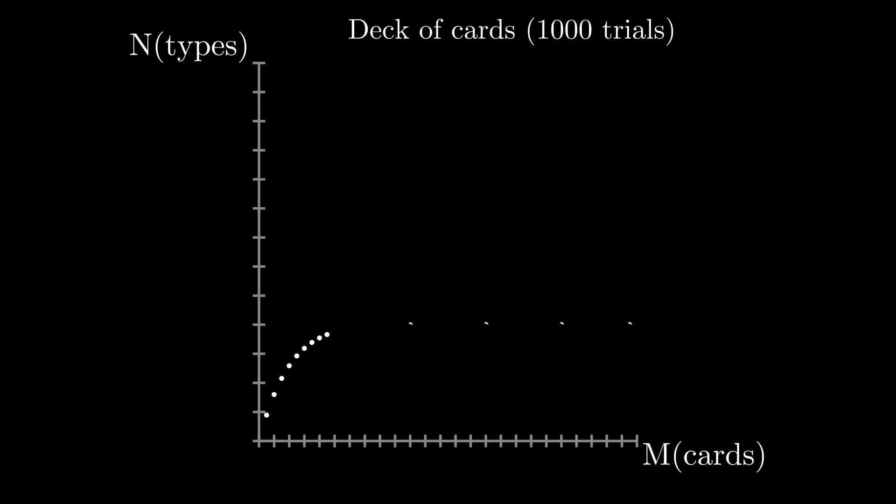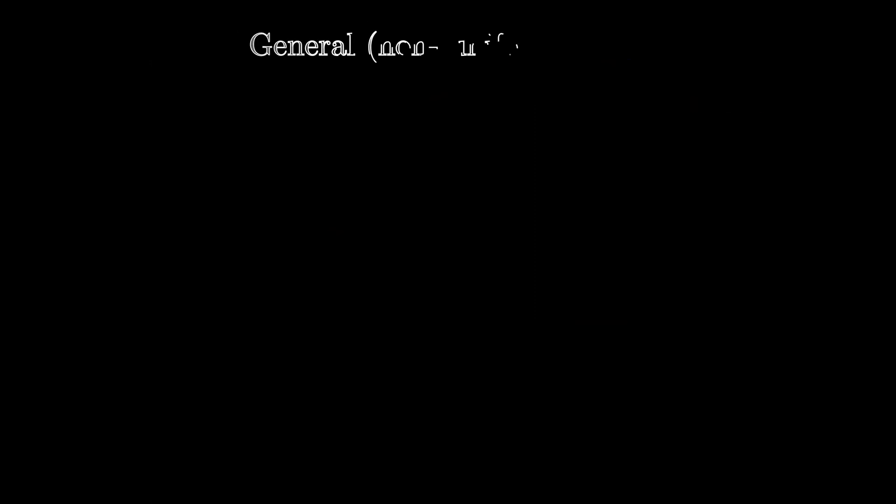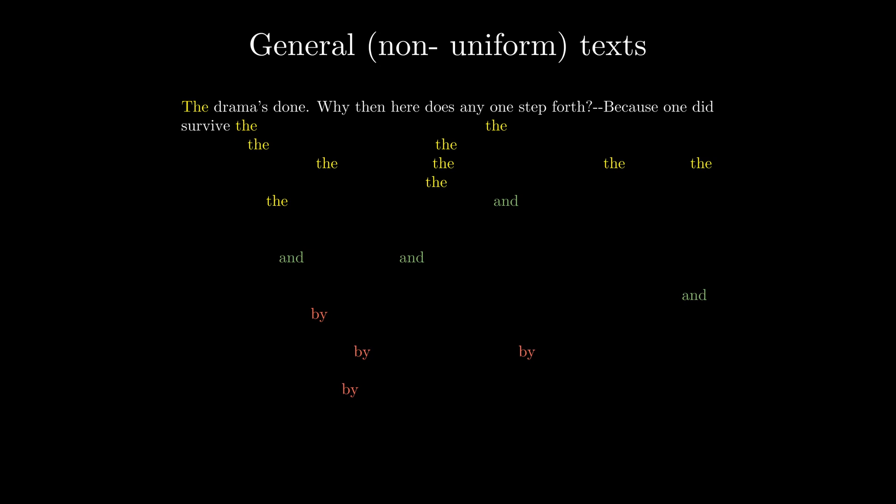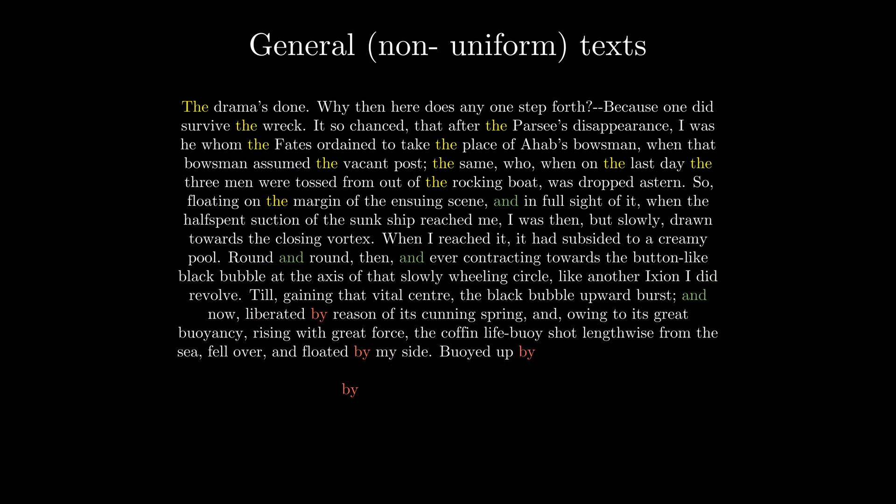As expected, it gives a smoother solution to our card sampling example. But how can we study general, non-uniform texts?